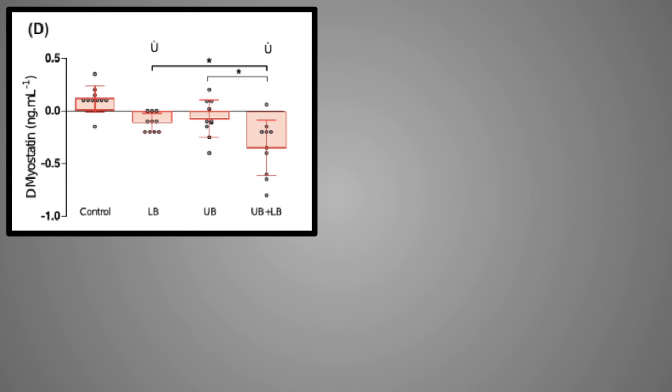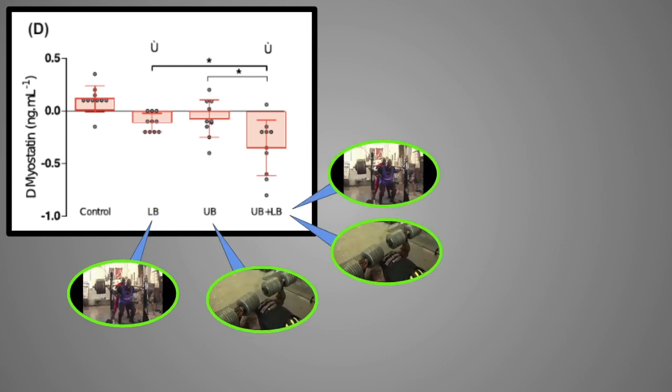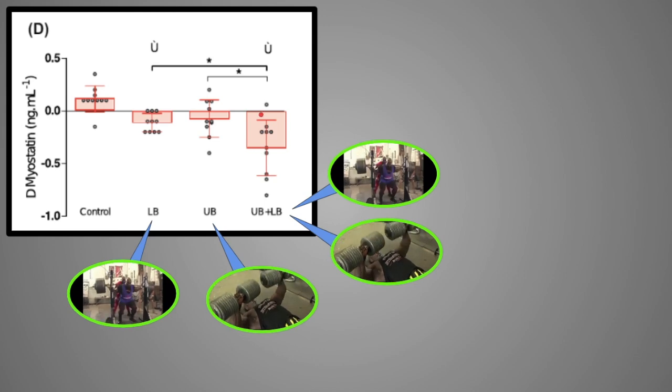The goal of the study was to see which method of training would drop myostatin the most. So once again, the lower body group only trained legs, the upper body group only upper body three times a week, and the full body group trained everything. And as you can see, unsurprisingly, the full body group had the biggest, by far the biggest drop in myostatin.